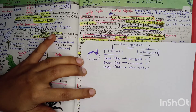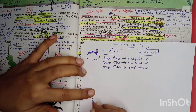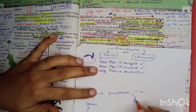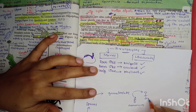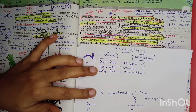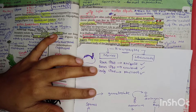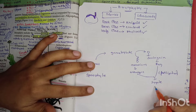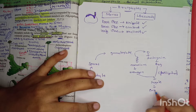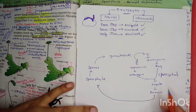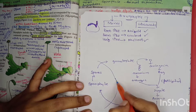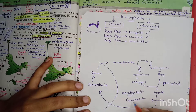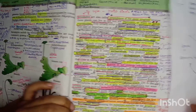The spores germinate to produce a gametophyte. The gametophyte contains both male and female organs - antheridium (male) and archegonia (female). Antheridium produces antherozoids, which fuse with the egg from archegonia to form a zygote. After fertilization, the zygote develops into an embryo, which develops into a sporophyte. The sporophytic stage is much less dominant than the gametophytic stage - the dominant stage is the gametophyte, which is haploid.